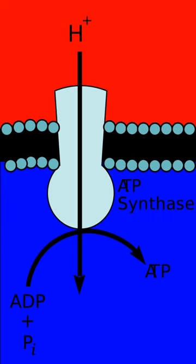Individual bacteria use multiple electron transport chains, often simultaneously. Bacteria can use a number of different electron donors, dehydrogenases, oxidases and reductases, and electron acceptors. For example, E. coli when growing aerobically using glucose as an energy source uses two different NADH dehydrogenases and two different quinol oxidases, for a total of four different electron transport chains operating simultaneously. A common feature of all electron transport chains is the presence of a proton pump to create a transmembrane proton gradient. Bacterial electron transport chains may contain as many as three proton pumps, like mitochondria, or only one or two, but always at least one proton pump.